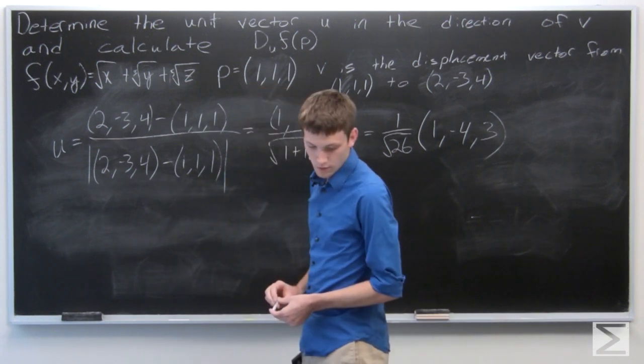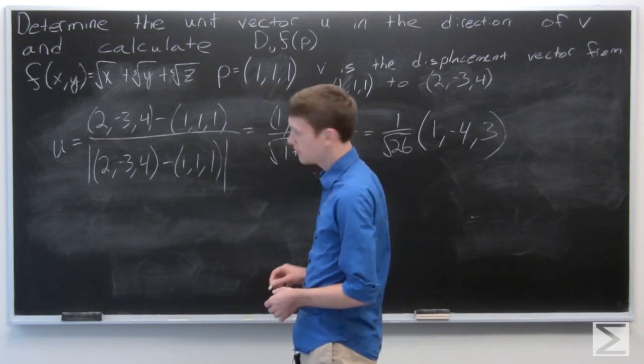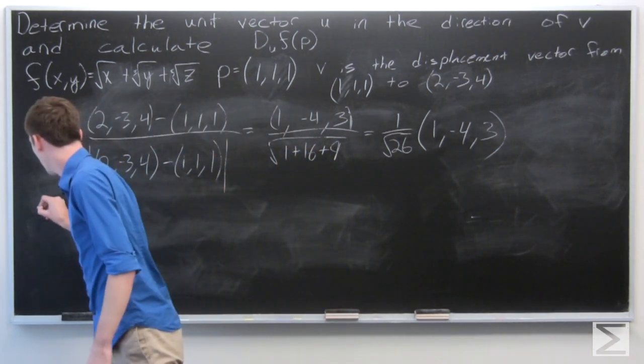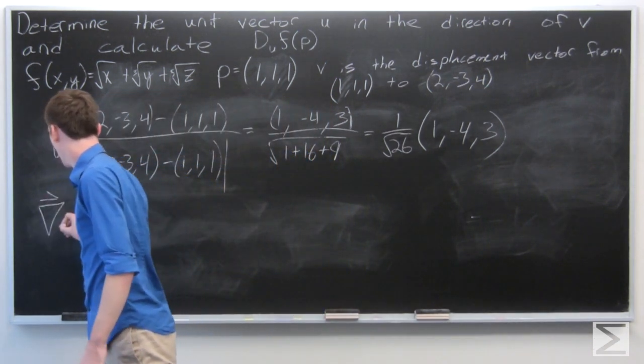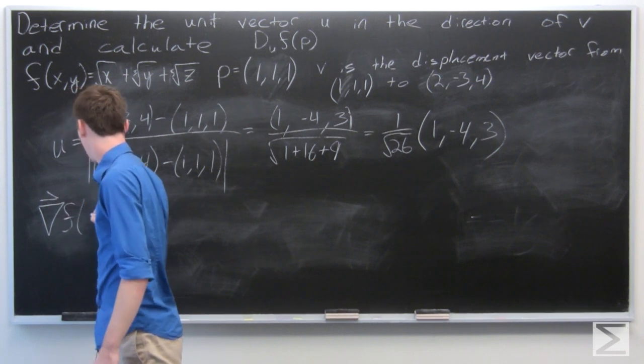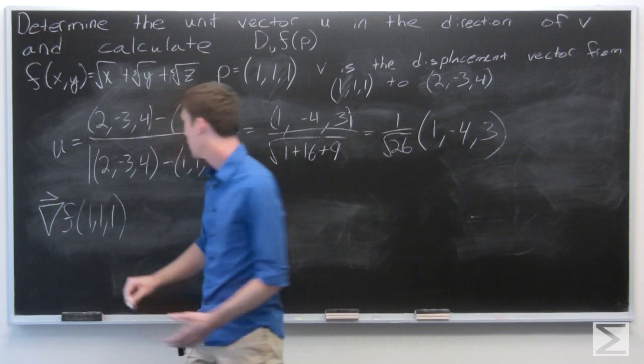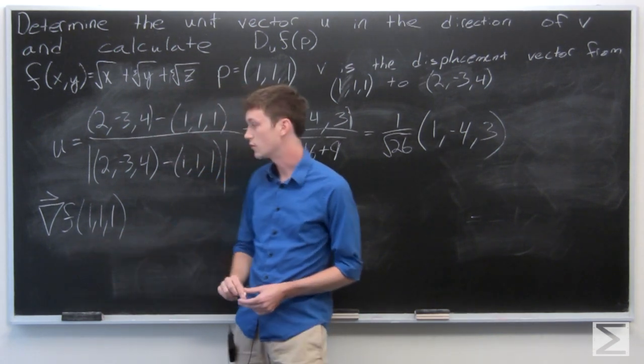OK, so we can now calculate the directional derivative. But first we're going to want the gradient vector of f at the point p equals (1,1,1).